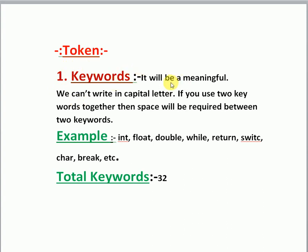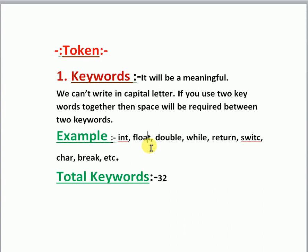Keywords are words that have a reserved, meaningful role in C. We can write keywords only in small letters — we cannot write them in capital letters. We can use two keywords together but one space must be available between two keywords. Examples of keywords: int, float, double, while, return, switch, char, break, etc. There are 32 keywords available in total.